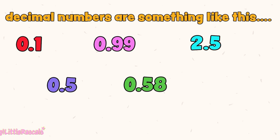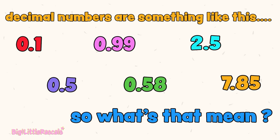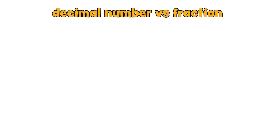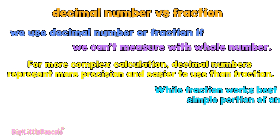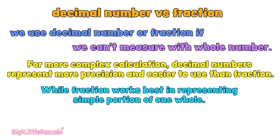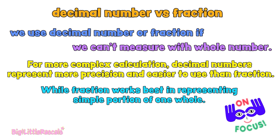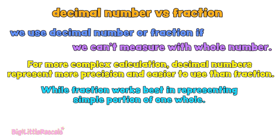Decimal numbers are something like this. Have you seen this kind of numbers before? What does that mean — decimal number versus fraction? We use decimal numbers or fractions if we can't measure with a whole number. For more complex calculation, decimal numbers represent more precision and are easier to use than fractions, while fractions work best in representing simple portions of one whole. If you are not familiar with fractions, not to worry — please check out our other fun learning videos on getting to know what fractions are, only at Big and Little Rascals fun videos.